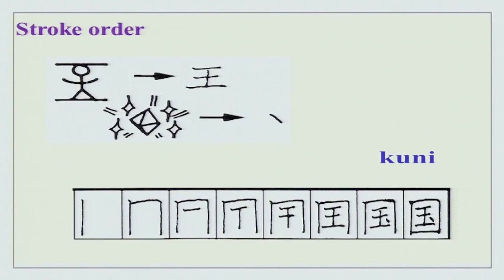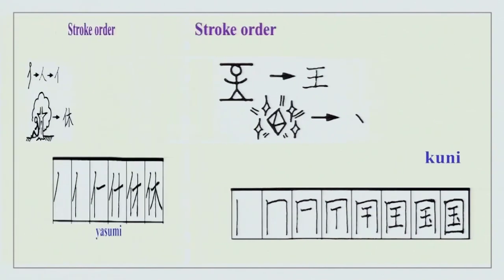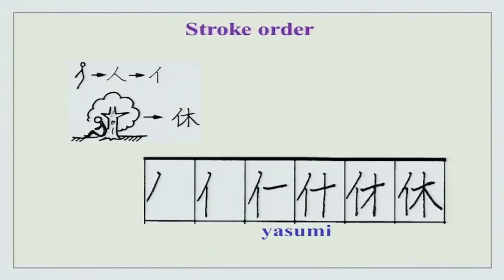Then we have kuni — 8-stroke character. You can see the king standing, trying to save his jewels from being stolen — that is how kuni is made. And yasumi — a man sitting under the tree and relaxing. This is how yasumi is written.